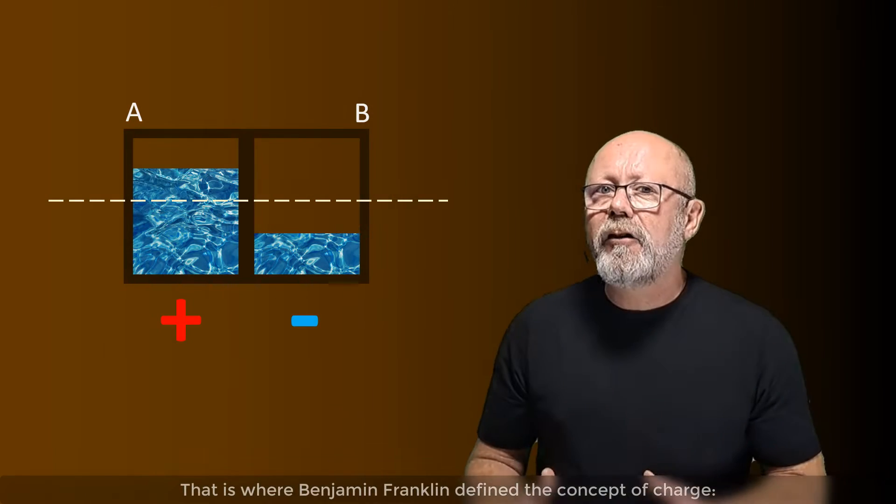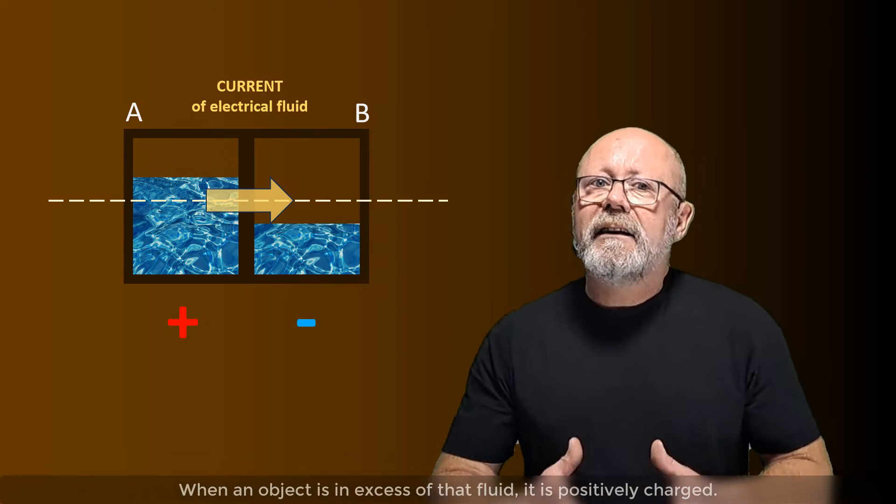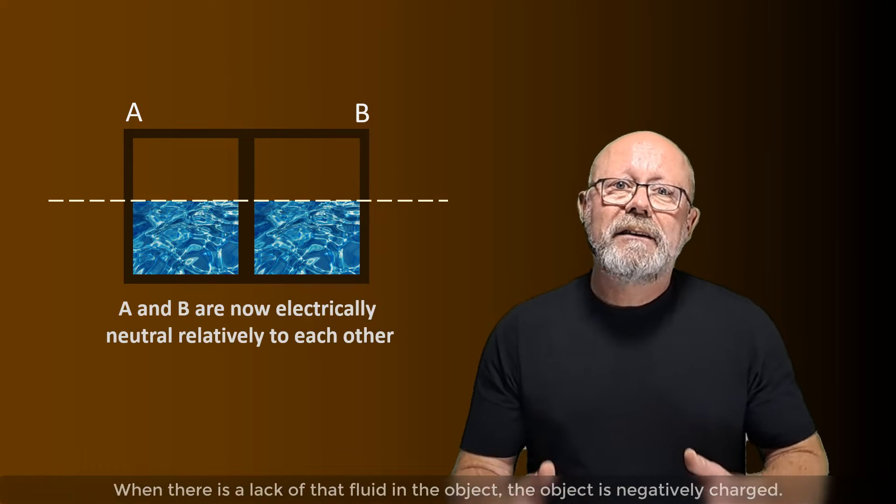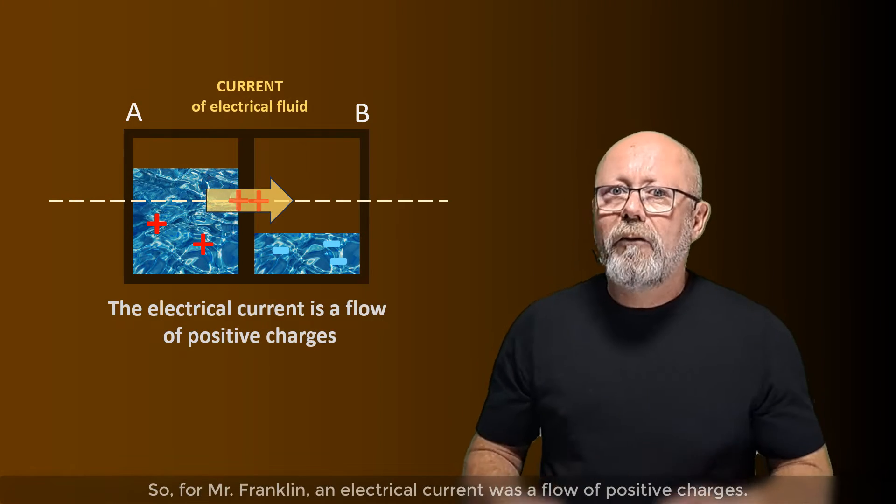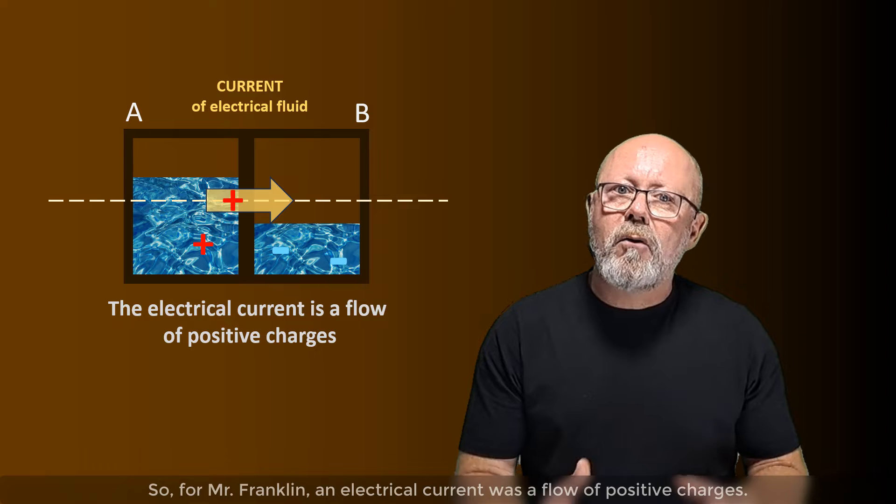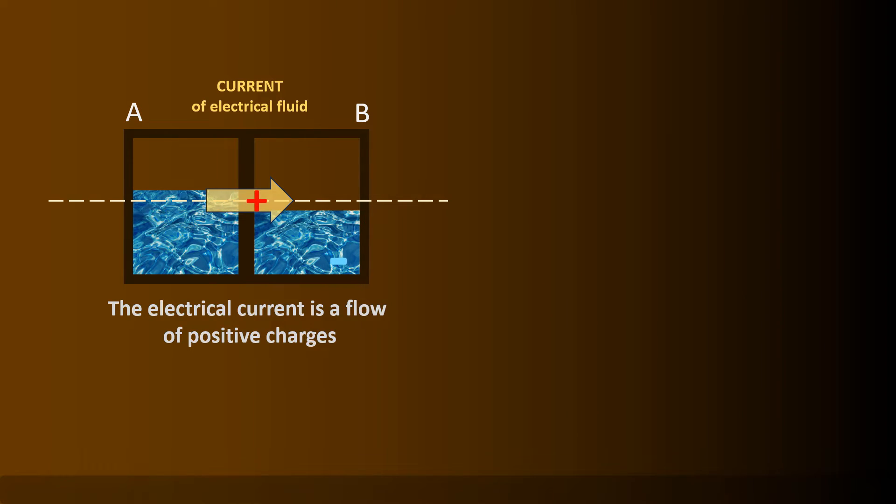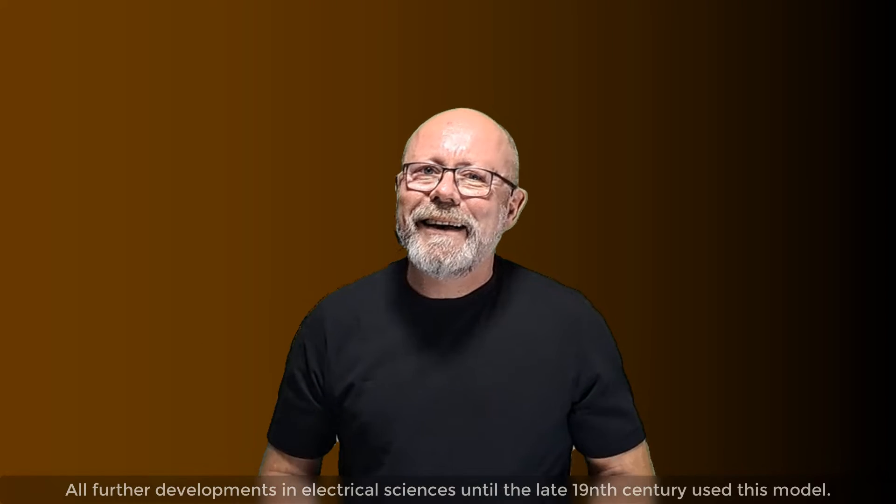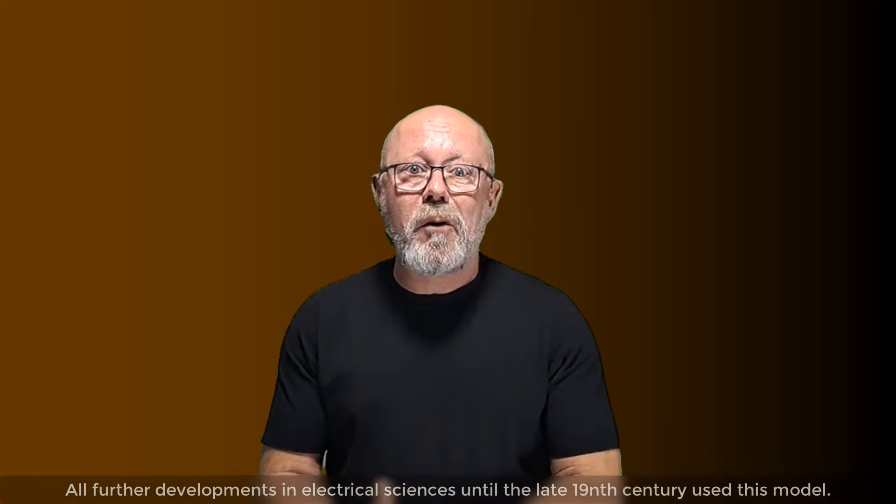That is where Benjamin Franklin defined the concept of charge. When an object is in excess of that fluid, it is positively charged. When there is a lack of that fluid in the object, the object is negatively charged. So, for Mr Franklin, an electrical current was a flow of positive charges.